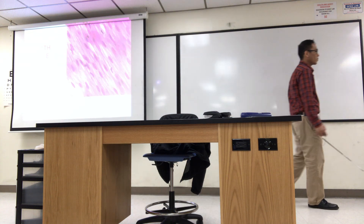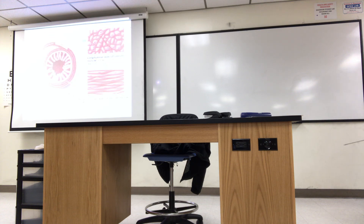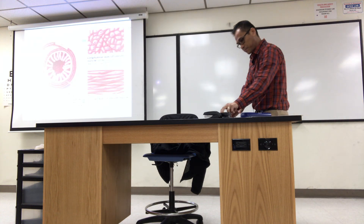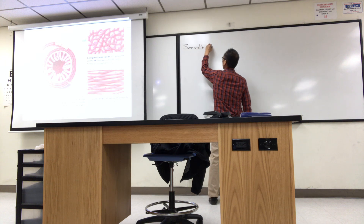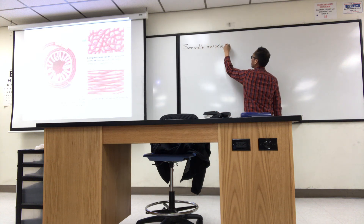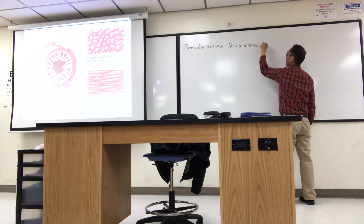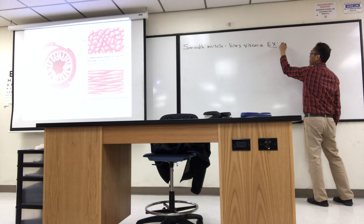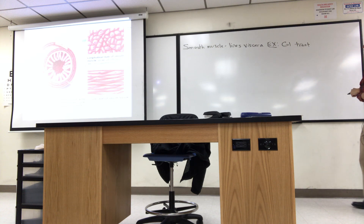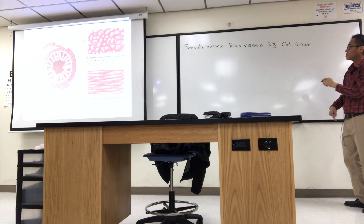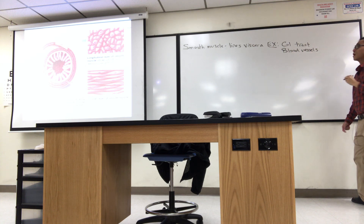Now I want to switch to smooth muscle and talk about its physiology. Smooth muscle is the involuntary muscle that lines the viscera — in this example, the digestive tract. GI stands for gastrointestinal, your digestive tract. It also lines the insides of blood vessels and your reproductive tract.